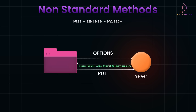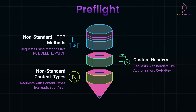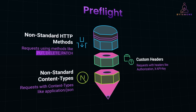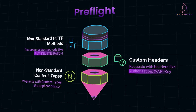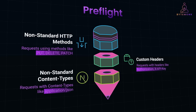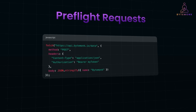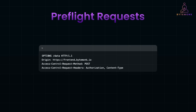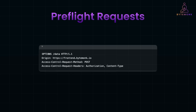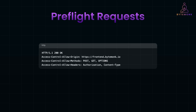A pre-flight request happens when the request uses non-standard HTTP methods such as PUT, DELETE, or PATCH, includes custom headers such as Authorization or X-API-Key, or has a non-standard Content-Type such as application/json. Here is an example of a pre-flight CORS request: before sending the real request, the browser first sends an OPTIONS request, the server must respond with the appropriate headers, and once that response is received, the browser sends the actual request.